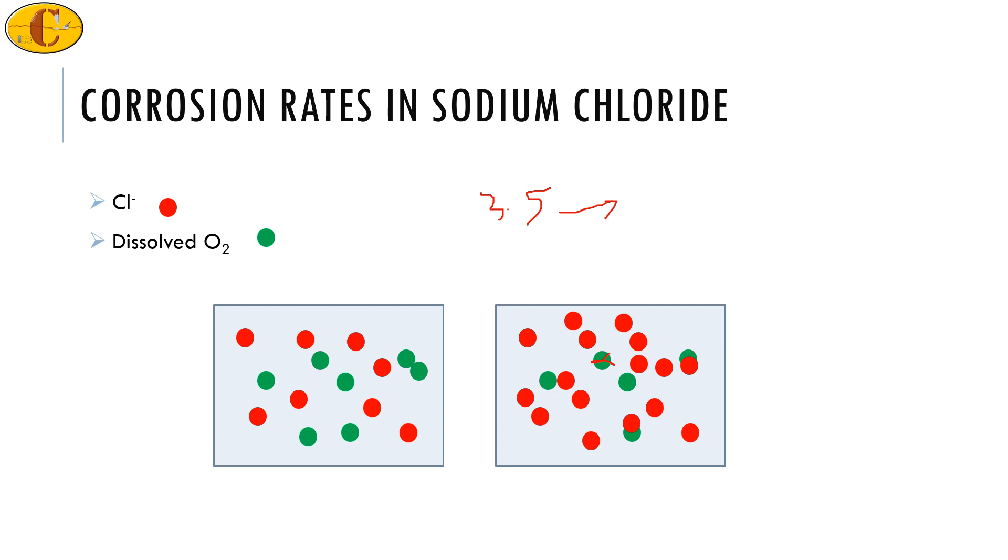This will change the corrosion behavior of the two concentrations. The advantage of the 5 weight percent in this case is you will still have a high amount of chloride ions.